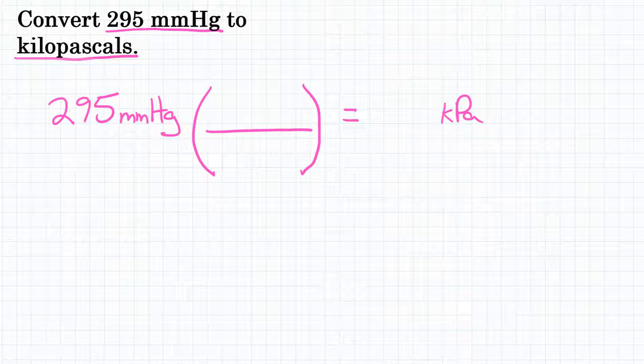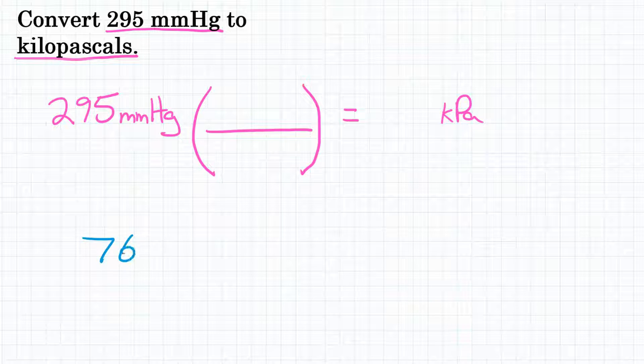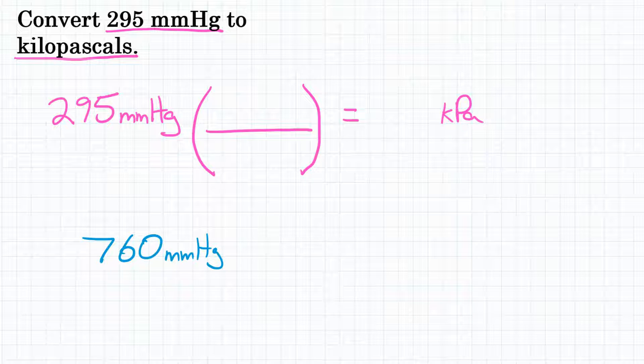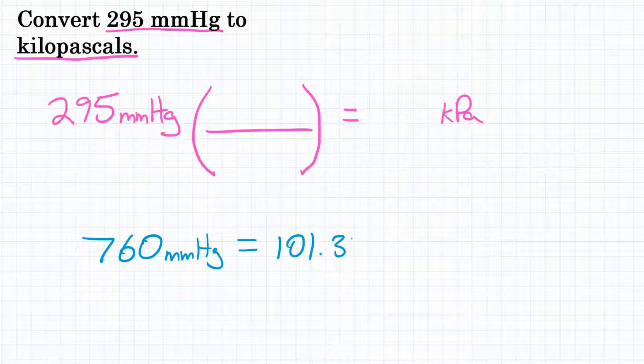What is the relationship between millimeters of mercury and kPa? Well, 760 millimeters of mercury is the exact same pressure as 101.325 kPa.